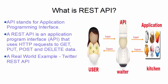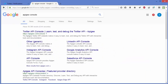A REST API is an intermediate service to access some resources. Real-world examples include a Twitter API, a Google Maps API, or Facebook's Graph API. For example, you could use Facebook's Graph API to find out who has the most popular page on Facebook, or you could use Twitter's REST API to post something on Twitter.